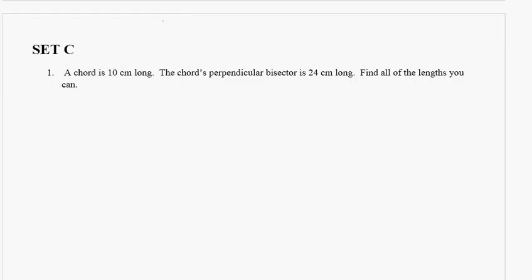A chord is 10 centimeters long. The chord's perpendicular bisector is 24 centimeters long. Find all the lengths you can.